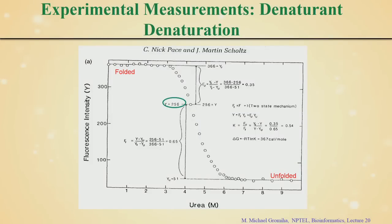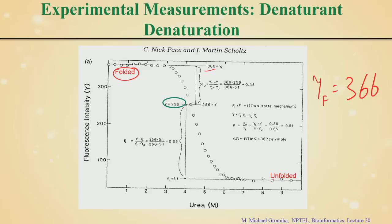Let us first see how we get experimental free energy. Here we can see data from fluorescence spectroscopy and urea denaturation. We add urea at different concentrations — here 1 to 9 — and see how we get the fluorescence intensity. On the left side is the folded state; slowly adding denaturant brings it to a denatured state, and finally it is completely unfolded. In the folded state the intensity yf equals 366, and in the unfolded state yu equals 51.